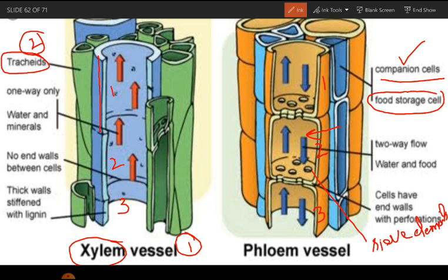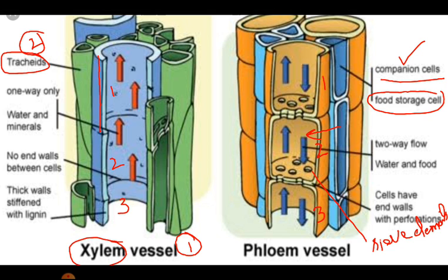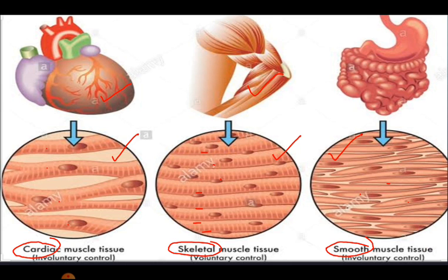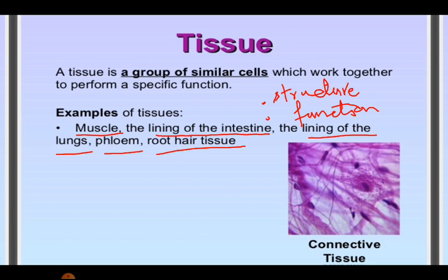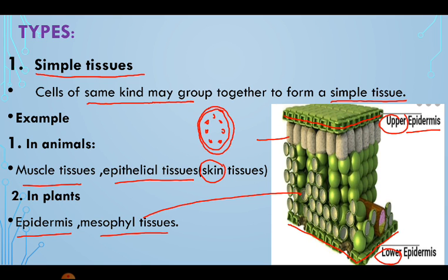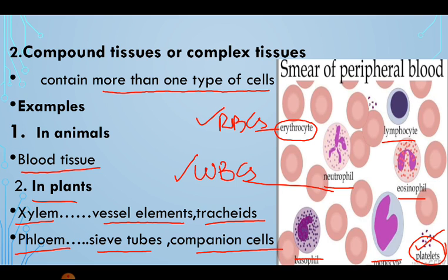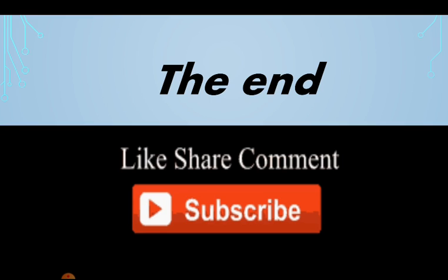So, what are tissues? Tissues are a group of similar or different cells which work together to perform a specific function. This is our second level of organization — the tissue. That is enough for today.